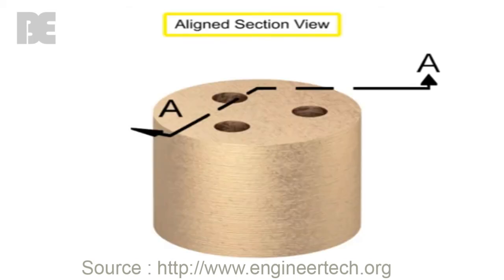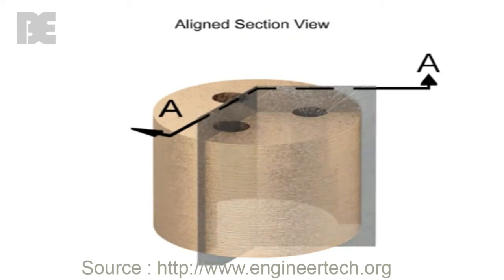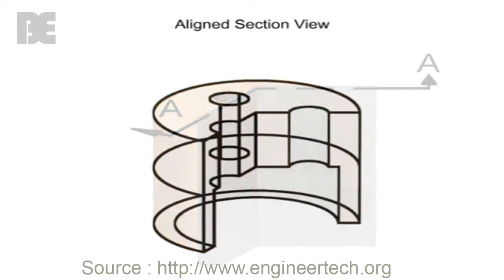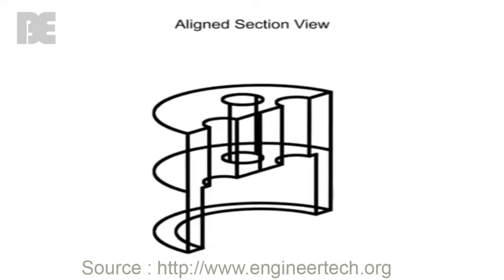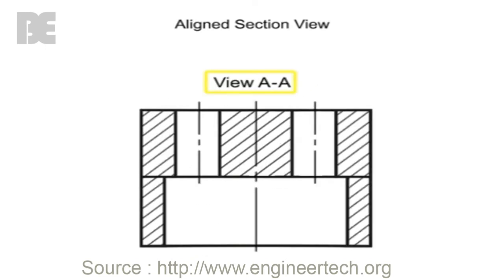Aligned section views occur where the cutting plane bends to pass through specific features of an object, then rotates to a normal vertical or horizontal plane and is projected to the section view. For circular parts, the cutting plane will almost always pass through the center of the part and then angle to another feature.